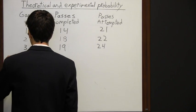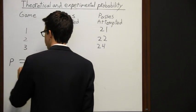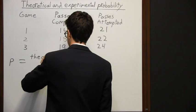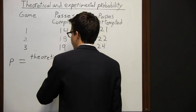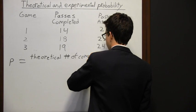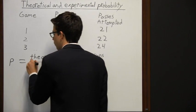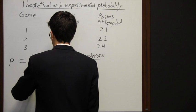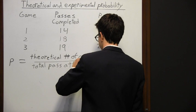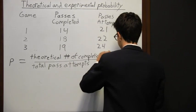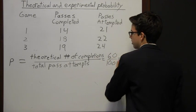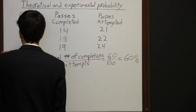So if we look at the probability here — I'll label that as P, the probability of completion — we have to take the theoretical number of completions and put that over the total pass attempts. In this case it's 60 over 100, which translates to 60 percent. So this is the theoretical probability.